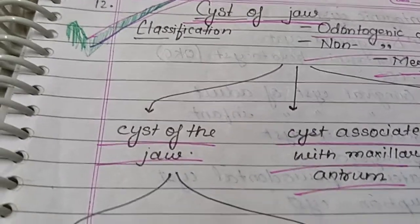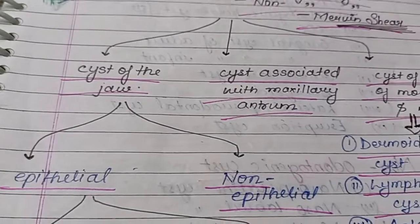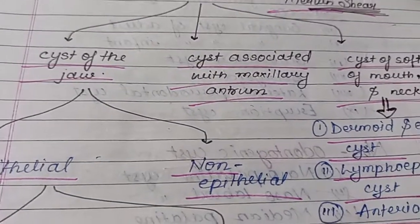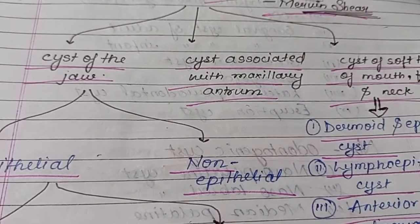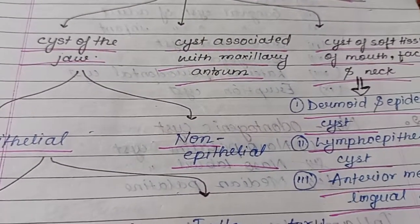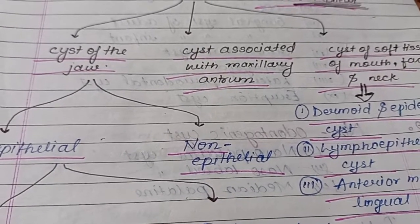Cysts are divided into three parts mainly: cysts of the jaw, cysts associated with the maxillary antrum, and cysts of soft tissue of the mouth, face, and neck.